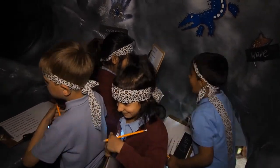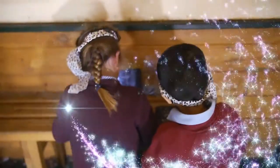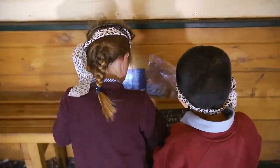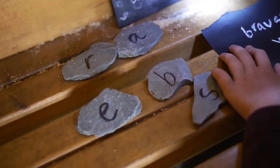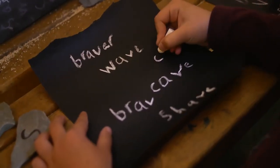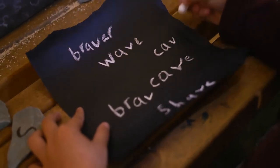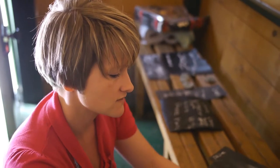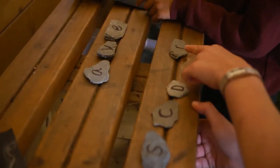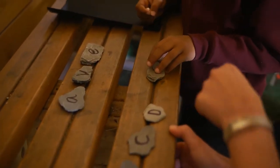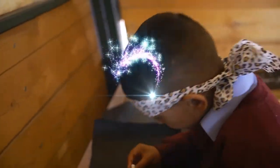This final group are practising building words using the split digraph A-E that can be found on Caveman Dave's rocks from his cave. They're creating a list of real and pseudo words — a fun game to practise reading. If we change the D for Dave, could we put a different letter? Brave! Good boy! That's brilliant!